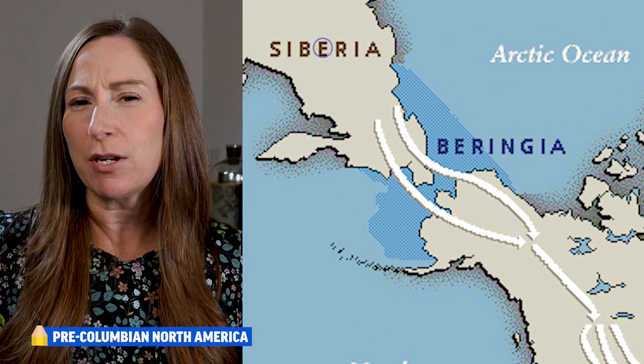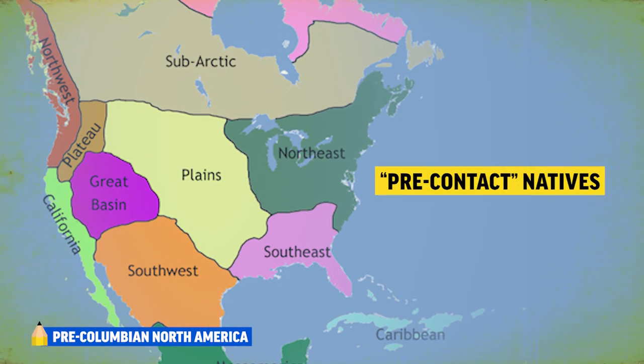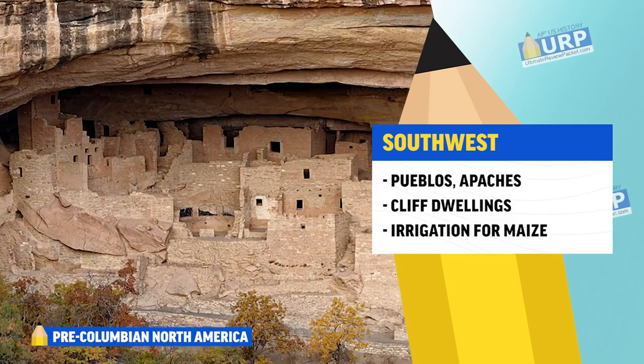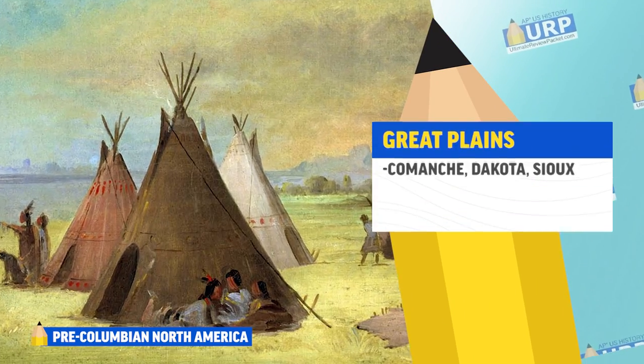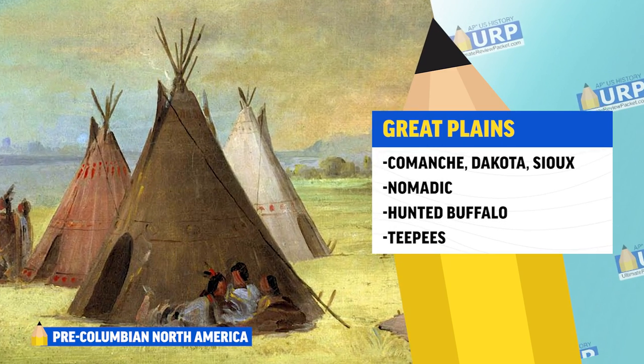Let's start by looking at North America prior to the arrival of Europeans. Anthropologists believe the Americas were originally settled somewhere between 10,000 and 40,000 years ago, with migrants from Asia possibly crossing a frozen land bridge connecting Siberia to Alaska. Pre-contact Natives are usually divided by geographic region and unique culture. The Pueblo and Apache populated the Southwest, building multi-story cliff dwellings and complex irrigation systems to grow maize. In the Northwest, Natives lived in longhouses, relied on fish especially salmon, and made totem poles with religious significance — including the Nez Perce and Shoshone. In the Great Plains, the Comanche, Dakota, and Sioux lived a nomadic lifestyle, hunting buffalo and living in teepees so they could move easily.